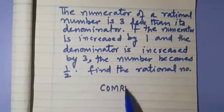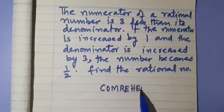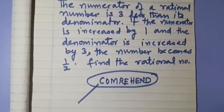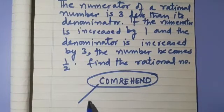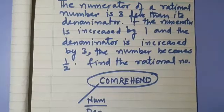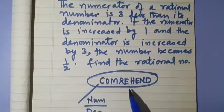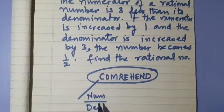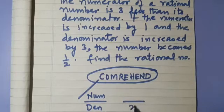Let us first comprehend this problem. We have a rational number, which has a numerator and a denominator. The numerator is 3 less than the denominator. So we assume the denominator as x.